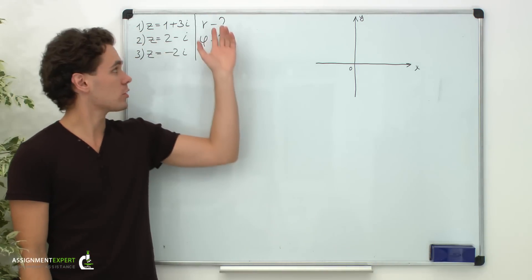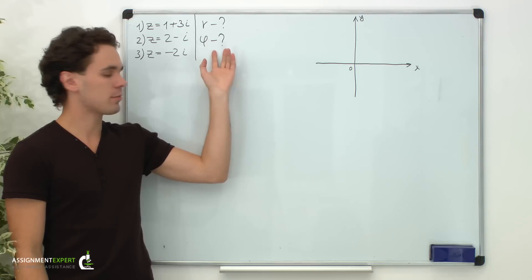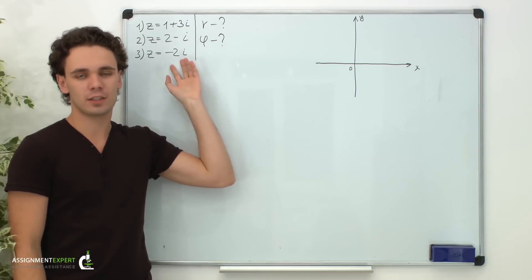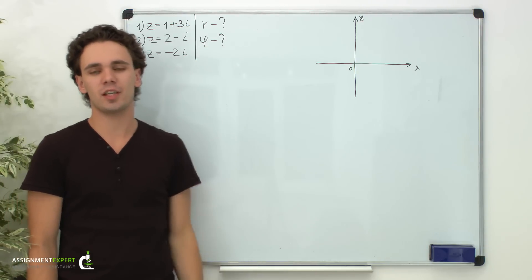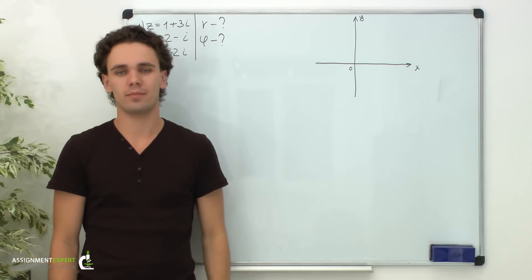Suppose we need to determine the modulus r and argument phi of the given complex numbers, and we need to graph them.